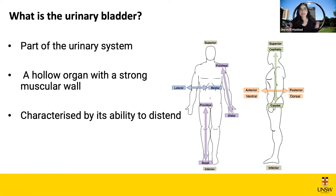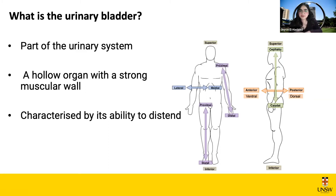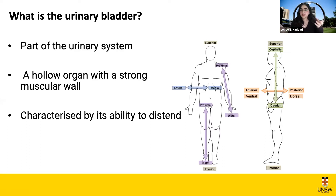So what is the urinary bladder? The urinary bladder is part of the urinary system, and the urinary system's function is to produce urine. The organs that constitute the urinary system include two kidneys — for most people a right and a left — whose main function is to produce urine.